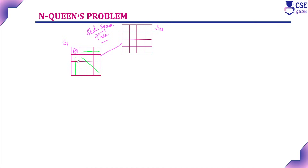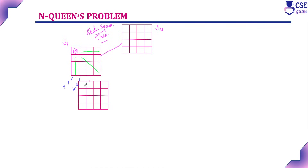For the second queen, we check each position. The first position is not possible and the second position is not possible — placing the second queen in the first position would cause an attack via the same column, and the second position would cause an attack via the same diagonal. The possibilities are the third and fourth positions. We try placing the second queen at position (2,3).